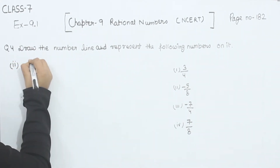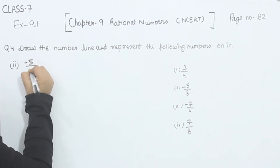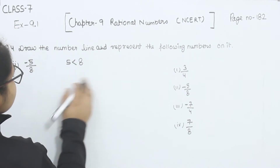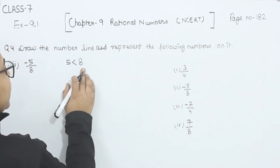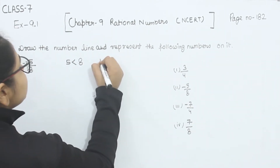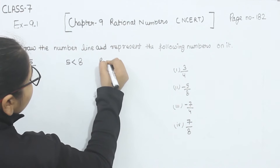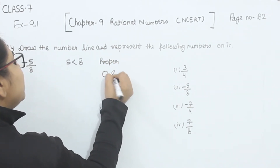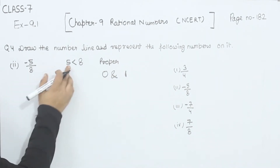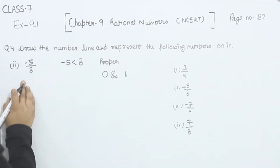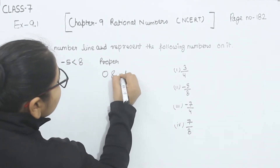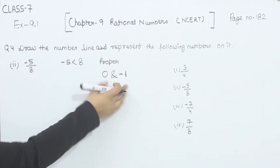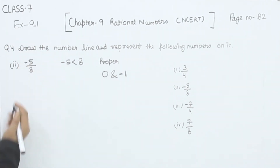In part 2, we are having minus 5 by 8. The numerator is 5 and the denominator is 8, so the denominator is greater than the numerator — this is a proper fraction. A proper fraction lies between 0 and 1, but since the number is negative, I apply the negative sign. So the number will lie between 0 and minus 1.